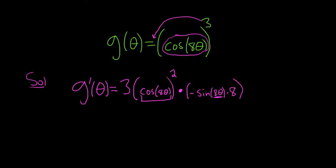It's like a double chain rule. So you bring down the 3, subtract 1, so you get 2, and times the derivative of the inside, which is negative sine of 8 theta, and then again times the derivative of the inside. So like a double chain rule.